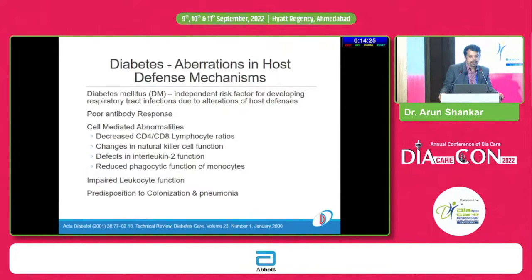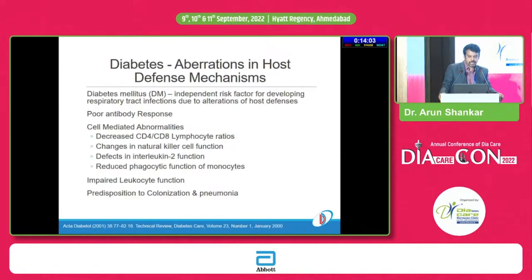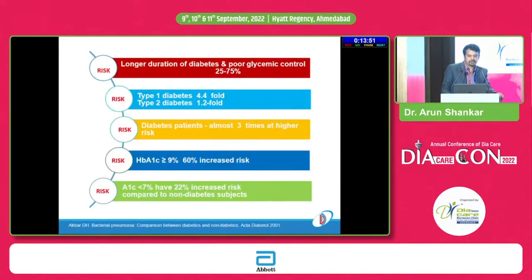Definitely, in diabetes we see impaired defense mechanisms, mainly starting with poor antibody response, cell-mediated abnormalities including decreased CD4/CD8 lymphocyte ratios, changes in natural killer cell function, defects in interleukin-2 function, and impaired leukocyte function. This poor defense mechanism predisposes to colonization and results in different infections, mainly respiratory infections.